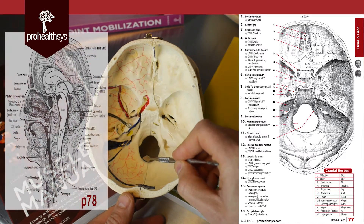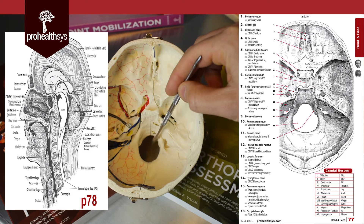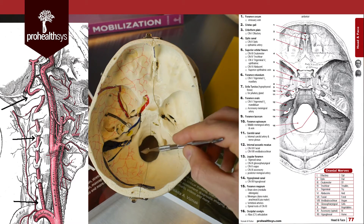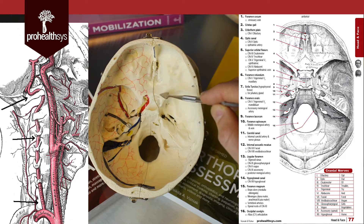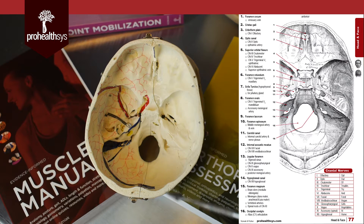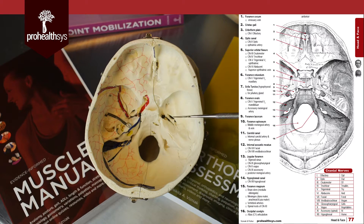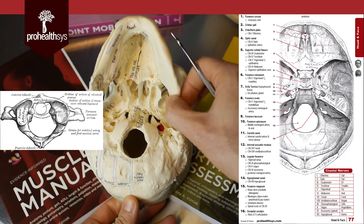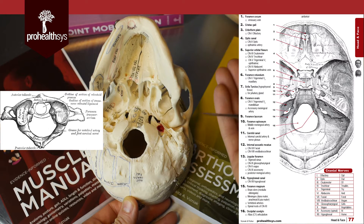The last and most important foramen is the foramen magnum. Through it pass the brainstem including the medulla oblongata, the meninges — dura mater, arachnoid, and pia mater — the vertebral arteries, which join as left and right to form the basilar artery contributing to the circle of Willis, and the spinal roots of the accessory nerve (CN XI), supplying the trapezius and SCM. The occipital condyles articulate onto C1, allowing mainly flexion and extension at the upper spine.